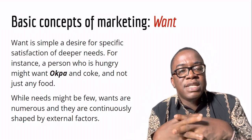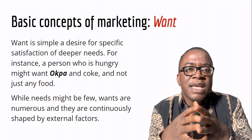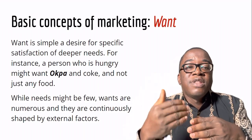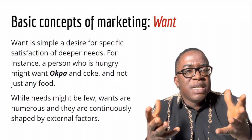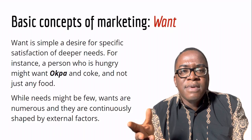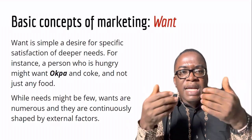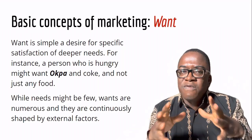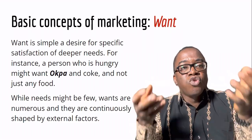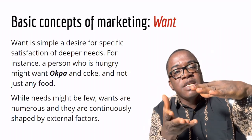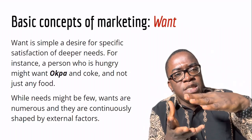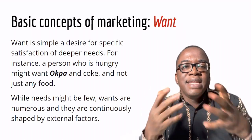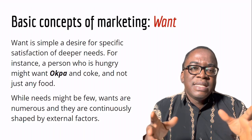We also need to understand that wants are usually shaped by external factors. For instance, if you go out to eat with friends, in many cases people will start ordering what the first person ordered — maybe the first person went for rice and chicken, then the second will say 'give me the same.' So their wants at that particular moment have been shaped by an external factor. It could be shaped by friends, families, business partners, or the environment. If you are in China and want to eat food, the available delicacies will mostly be Chinese, and that factor will shape what you eat.